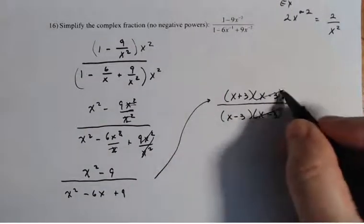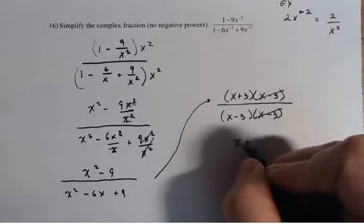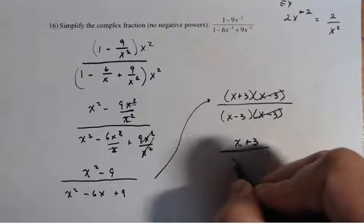So you can see that that cancels. So my final solution will be x plus 3 divided by x minus 3.